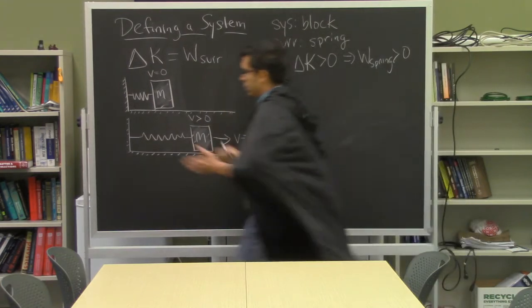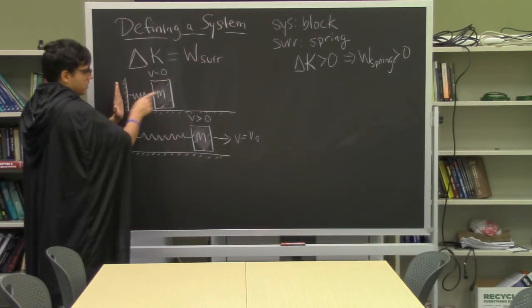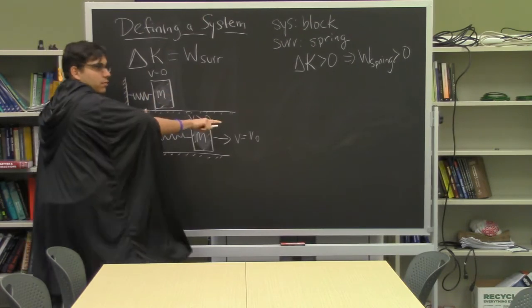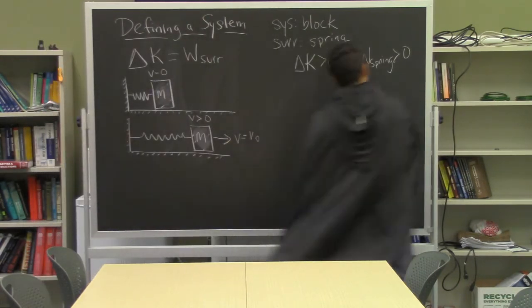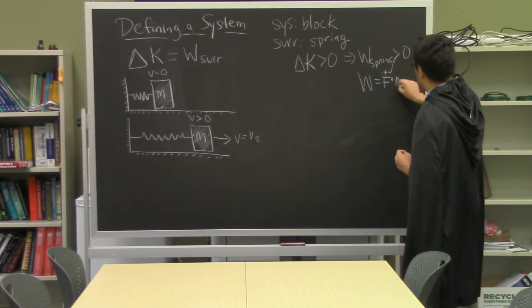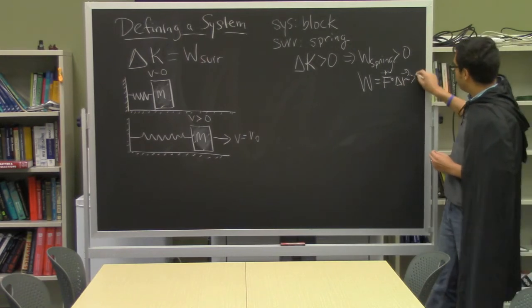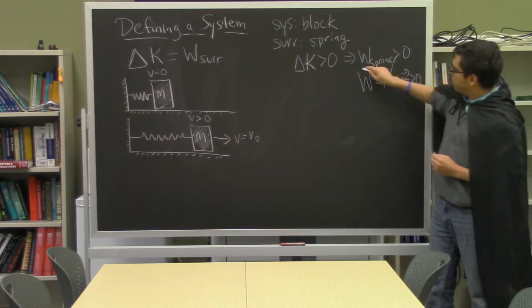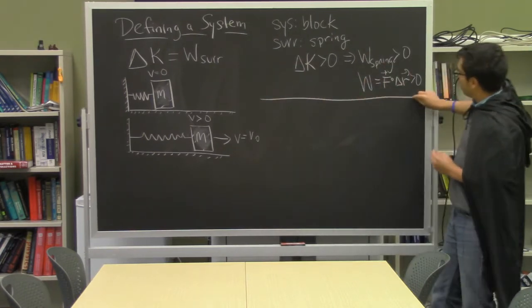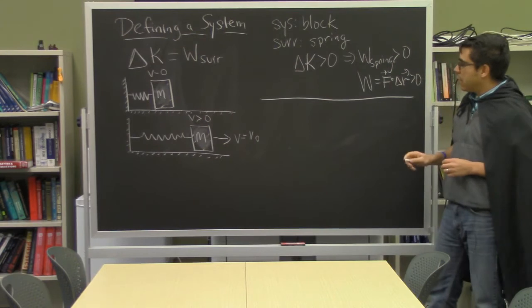So if you think about this, the spring is compressed so it exerts a force on the block to the right, the block displaces to the right, so from our definition of work as being the dot product of the force and the displacement we know that that is definitely going to be positive. So we see that all of these things interconnect just fine when we're talking about the system of a single particle, of just the block.